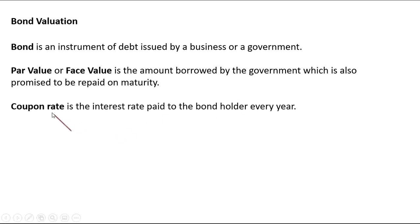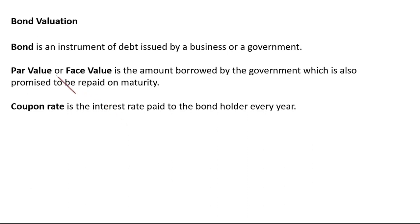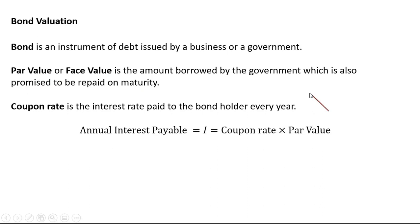The coupon rate is nothing but the interest rate paid by the bond holder or the government every year. So every year at the end of each year you are going to get certain interest, which is decided by that coupon rate. You are going to get the interest every year, year after year, and even in the final year. In the final year, you are going to get back your face value or the maturity value. So the annual interest payable, written as capital I, is nothing but the coupon rate multiplied by the par value written on the bond.